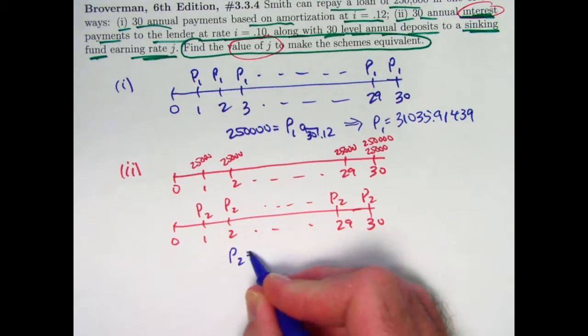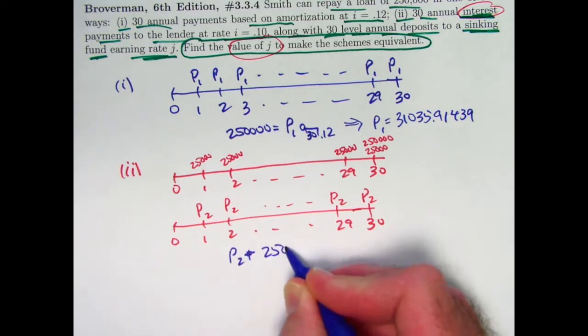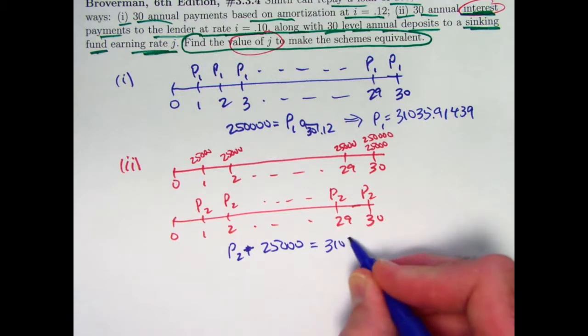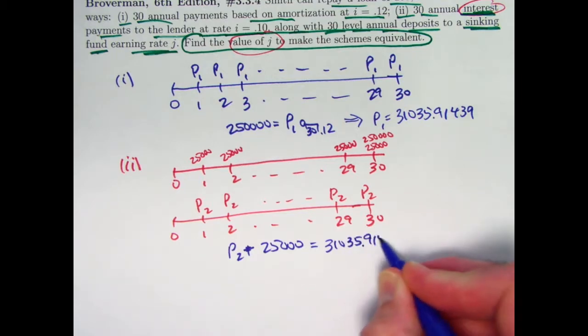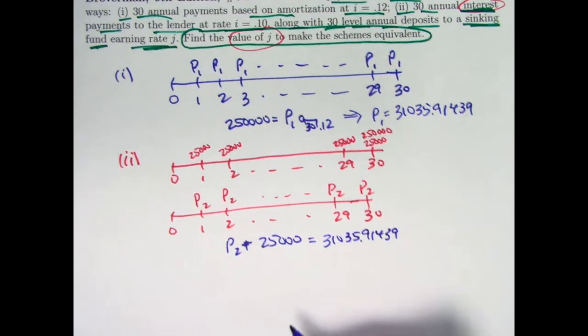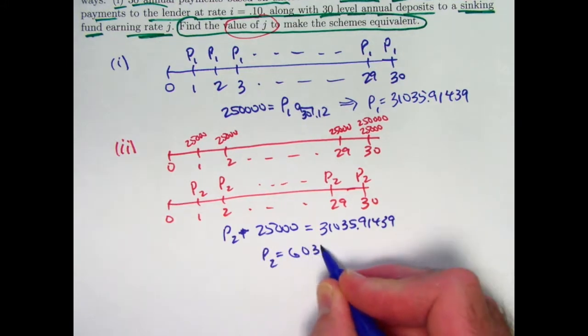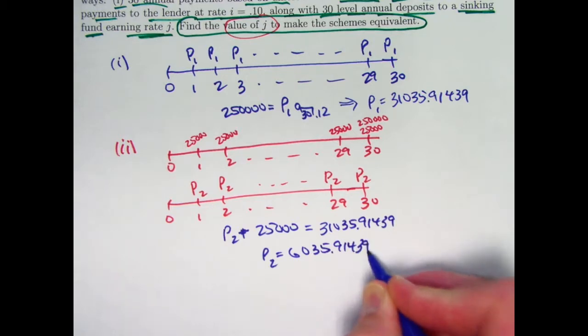P2 plus $25,000 must equal $31,035.91439, must equal P1. Therefore, P2 itself must be $6,035.91439.